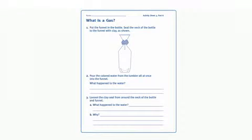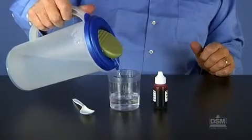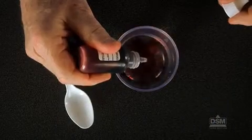To prepare for session one, make a copy of activity sheet three part A for each student. Use the knife to cut the clay into 16 equal pieces. Fill each team's tumbler about one-third full with water, add four drops of food coloring, and stir.